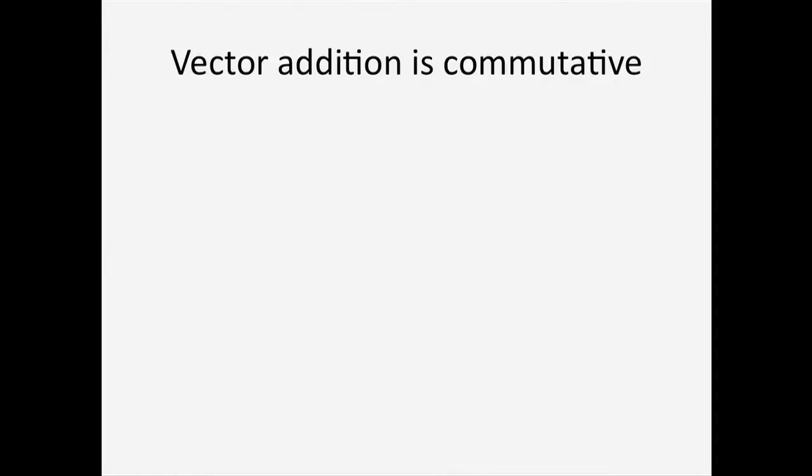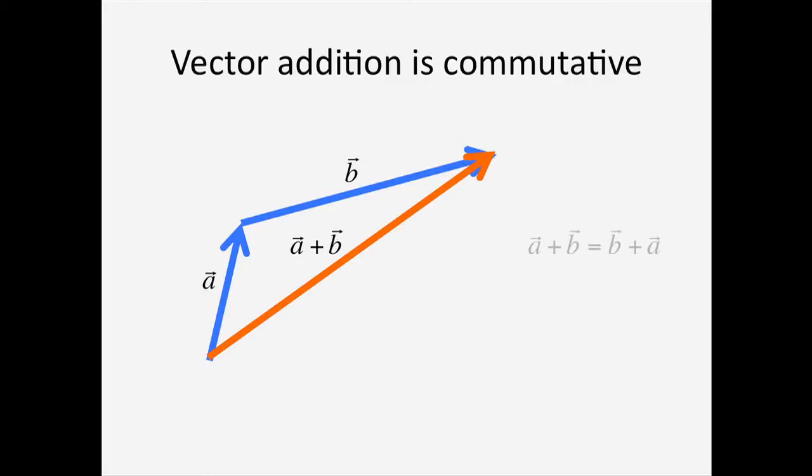To add vector b to vector a, we connect the tail of b to the tip of a, and the sum is the vector that connects the tail of a to the tip of b. An important property of vector addition is that it is commutative. That is, a plus b is equal to b plus a. You can see this visually from the parallelogram, whose diagonal represents both sums simultaneously.